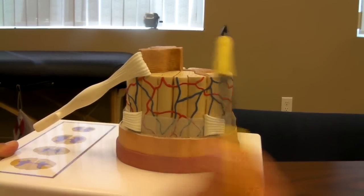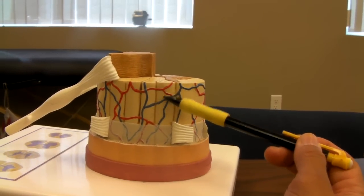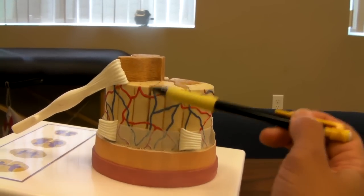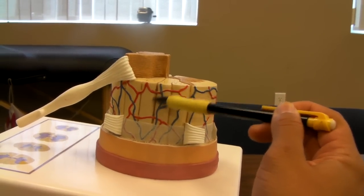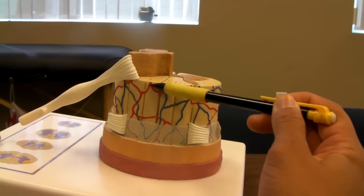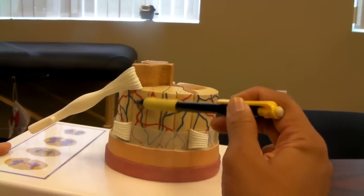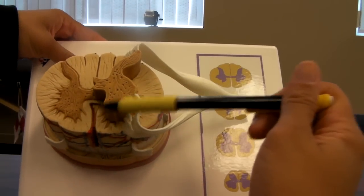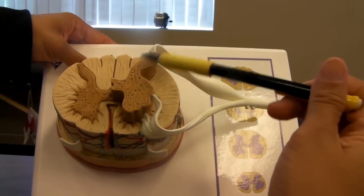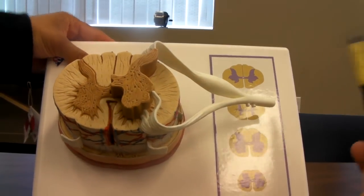And this area right here is the fasciculus cuneatus, fasciculus gracilis, the dorsal median sulcus, and then we have the fasciculus gracilis again, and fasciculus cuneatus, and these are the anterior horn and the dorsal root horns.